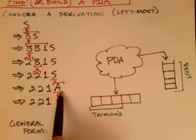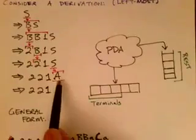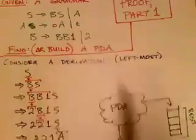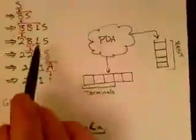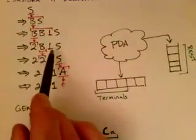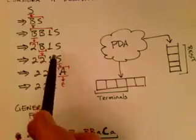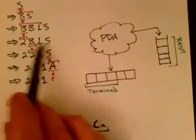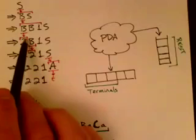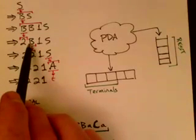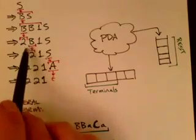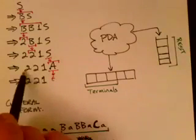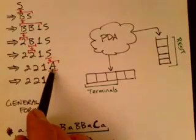At the end we replace the last non-terminal — in this case using the rule A goes to epsilon. So at any stage in this leftmost derivation we've got a sentential form such as 2B1S, with some terminals and non-terminals mixed together. In particular, we've got several terminal symbols that precede the leftmost non-terminal. In general, we have a bunch of terminals followed by the leftmost non-terminal, followed by some other stuff which can contain both terminals and non-terminals.